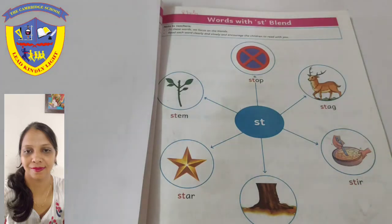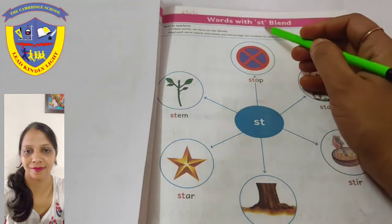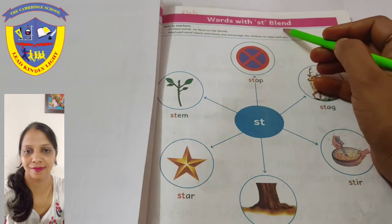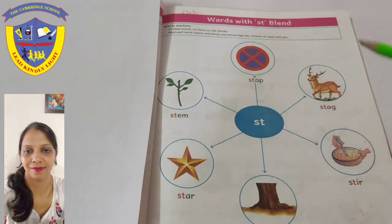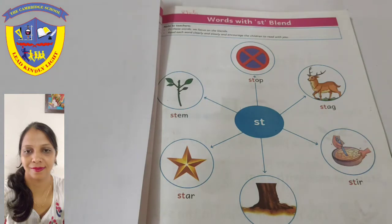Good morning, my lovely kids. I hope you all are doing well at home. Kids, today we are going to read Words with St Blend from Language Picture Dictionary Book at page number 29. All are ready? Let's start.